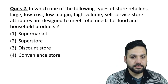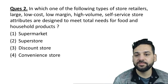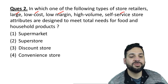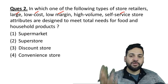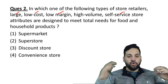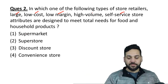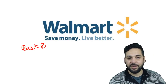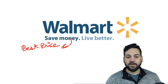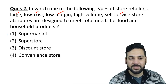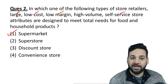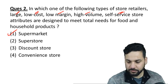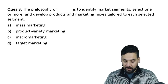Question 2: 'In which one of the following types of store retailers are large, low-cost, low-margin, high-volume, self-service store attributes designed?' This describes Walmart — known as Best Price in India. Walmart is a supermarket: large, low-cost, low-margin, high-volume, self-service. So the answer is supermarkets.